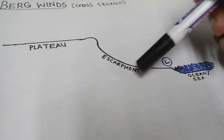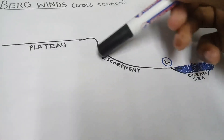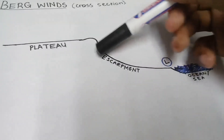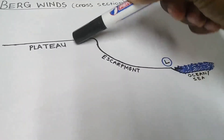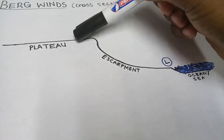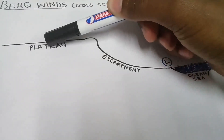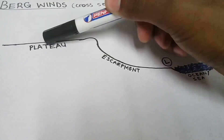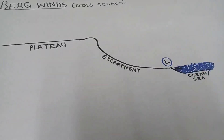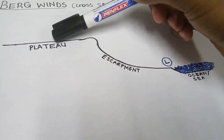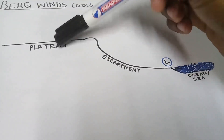Those coastal areas are shown here at the bottom. Down the escarpment are places on the escarpment. And here are places on the plateau — areas like the North Eastern Cape, the Free State, Bloemfontein, Highveld, and the North West province.